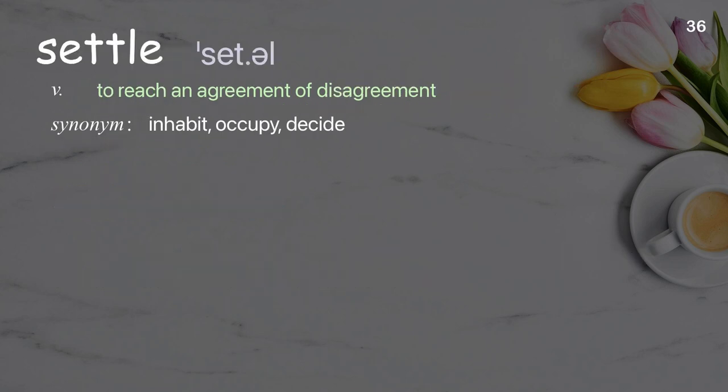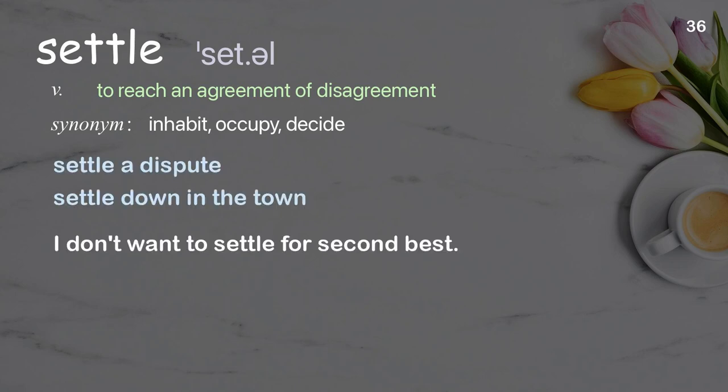Settle: to reach an agreement on a disagreement. Examples: settle a dispute, settle down in the town. I don't want to settle for second best.